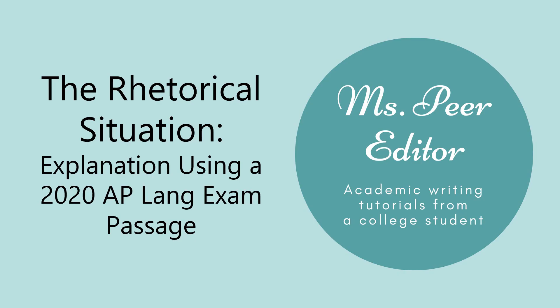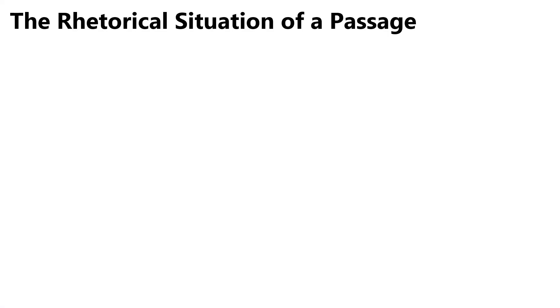We'll be using an actual passage that was featured in the 2020 online AP exam, and I'll put the link to that passage in the description box below for you to check out. The rhetorical situation is basically the who, what, where, when, why, and how of the passage, and it's a key part of the College Board's rubric. Every rhetorical choice that you find in a passage will somehow tie back to the situation, and the rhetorical situation is composed of six different parts.